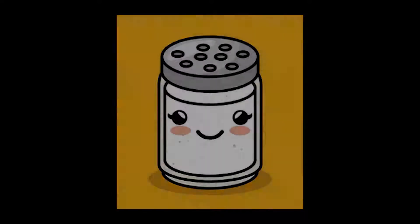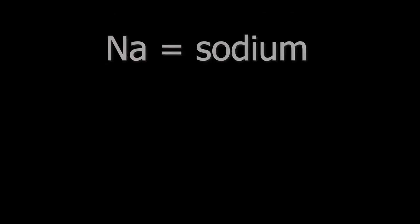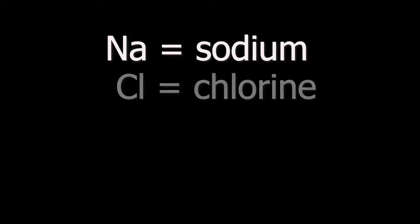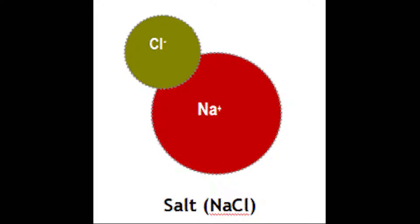Let's take one more example. Cooking salt's chemical formula is NaCl. Na is the symbol of sodium element and Cl is the symbol of chlorine element. So cooking salt is made from sodium and chlorine elements. And in a single salt molecule, one atom of sodium and one atom of chlorine are present.